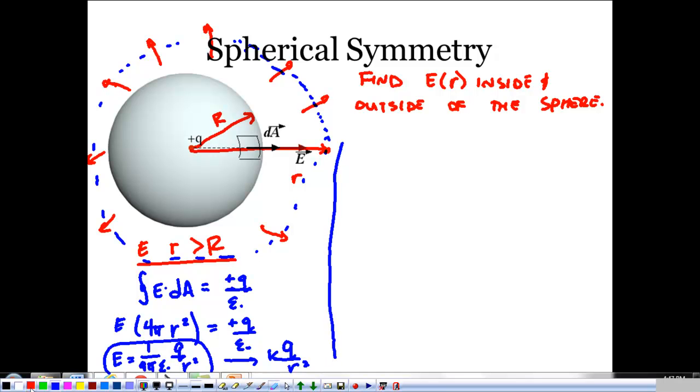Inside's even better. For the inside, I'm going to draw a Gaussian sphere inside of the shell. So, if I'm looking at the electric field where R is less than the radius of my shell, what I see is I've got E dot dA is equal to Q enclosed over epsilon naught.